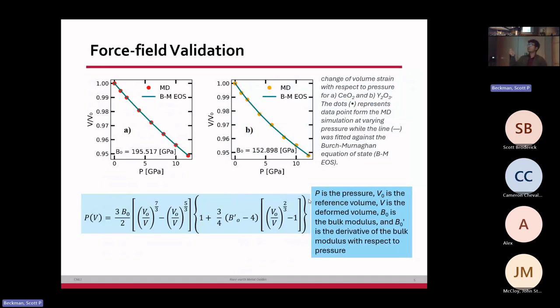What we did is we equilibrated the super cells at different pressures, ranging from one atmospheric pressure to 12 gigapascals, plotted the change of volume, and fitted the curve to Birch-Murnaghan equation of state to get the bulk modulus and the change of bulk modulus with respect to pressure.